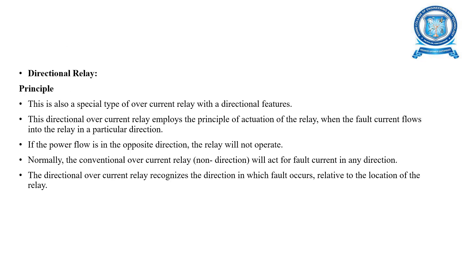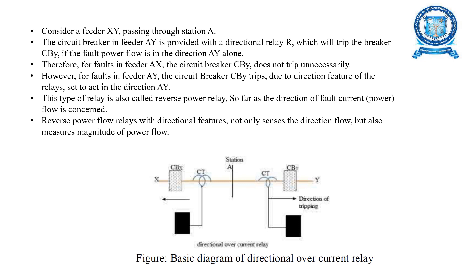Next is the directional relay. The main principle is that the directional overcurrent relay actuates when fault current flows into the relay in a particular direction. If power flows in the opposite direction, the relay will not operate. The directional overcurrent relay recognizes the direction in which the fault occurs relative to the relay's location. Here is the basic diagram of a directional overcurrent relay considering feeder XY passing through section A, with circuit breaker CBY provided with directional relay R.